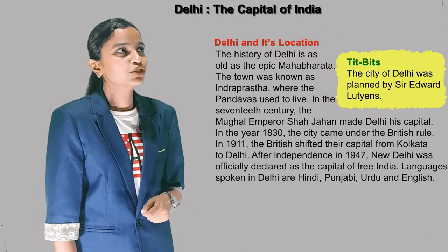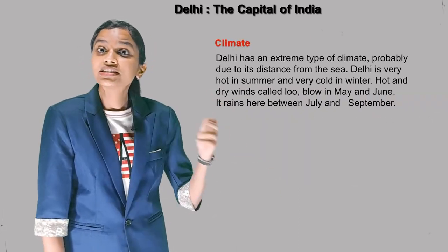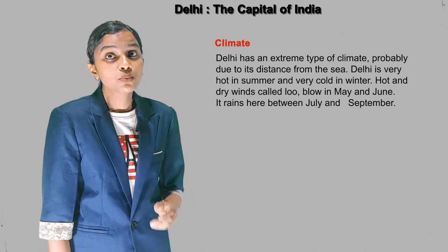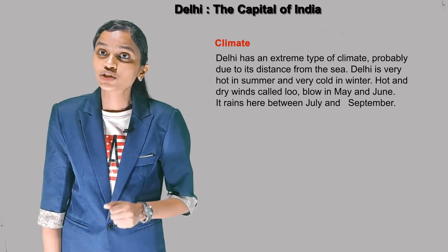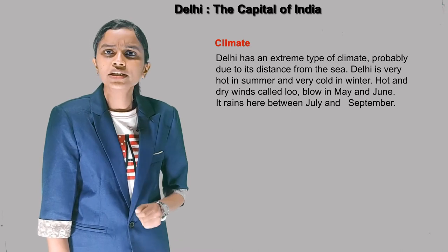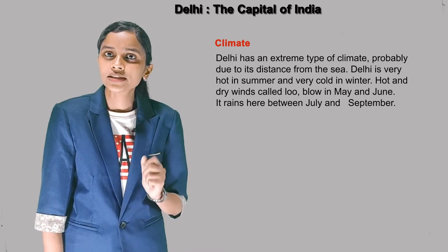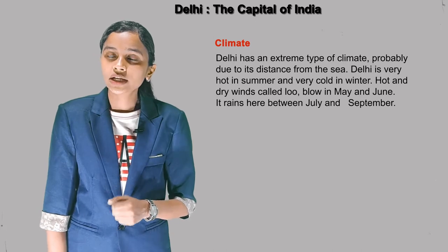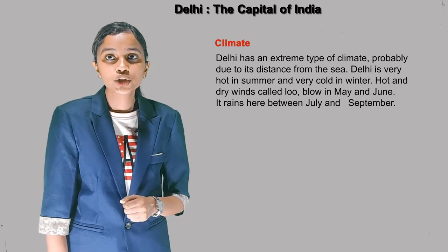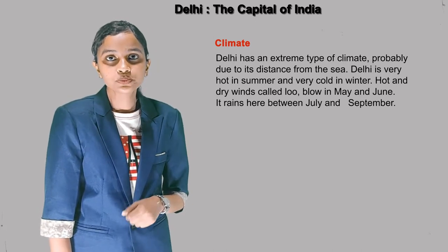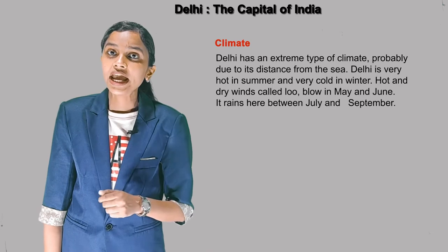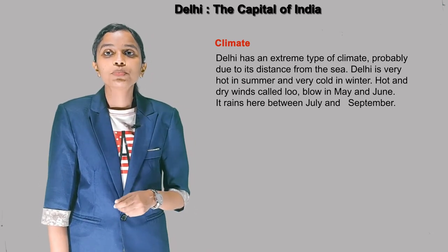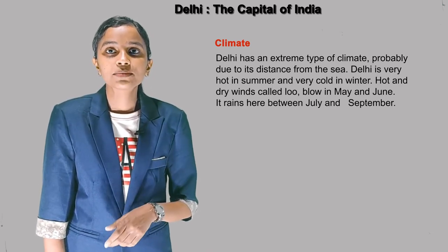Now we are moving to the climate. Delhi has an extreme type of climate, probably due to its distance from the sea. Delhi is very hot in summers and very cold in winters. Hot and dry winds called Loo blow in May and June. It rains here between July and September.